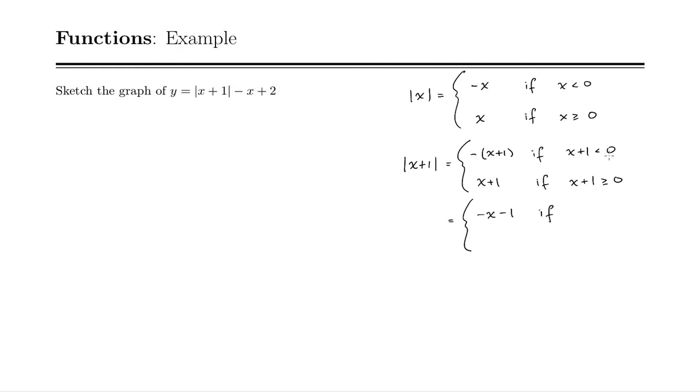So I'll go ahead and write this as negative x minus 1. This is if, and I'm going to move the 1 over, so subtract 1 from both sides, I get x less than negative 1. And it's x plus 1 if x is greater than or equal to negative 1. So that's the absolute value of x plus 1.